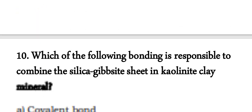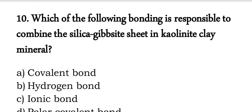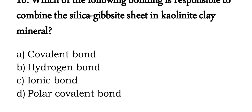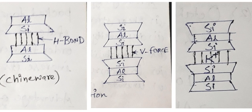Question 10: which bonding is responsible for combining the gibbsite and silica sheets in kaolinite clay? The answer is hydrogen bond, option B. Kaolinite clay mineral layers are held together by hydrogen bonding.